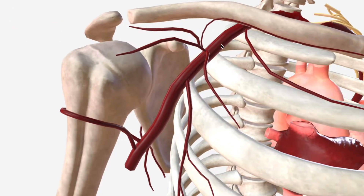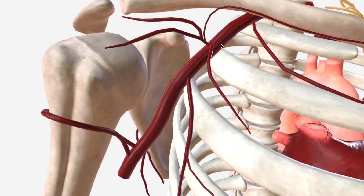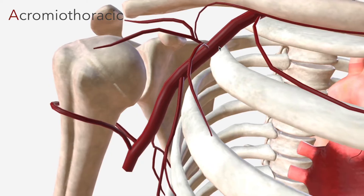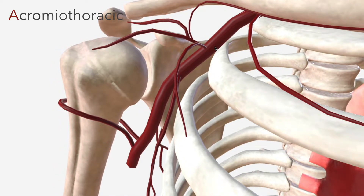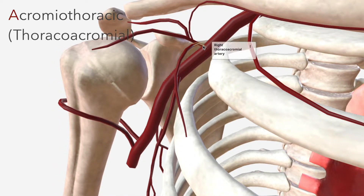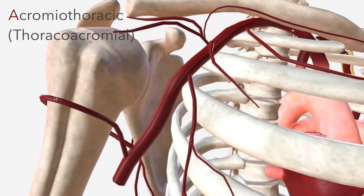We then have the acromiothoracic artery, which tends to be referred to as the thoracoacromial artery, but for the purpose of this mnemonic we're going to call it the acromiothoracic. It also supplies the deltoid muscle, as it branches out laterally.